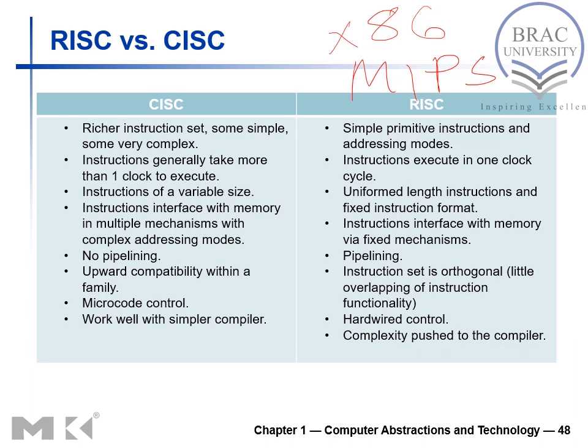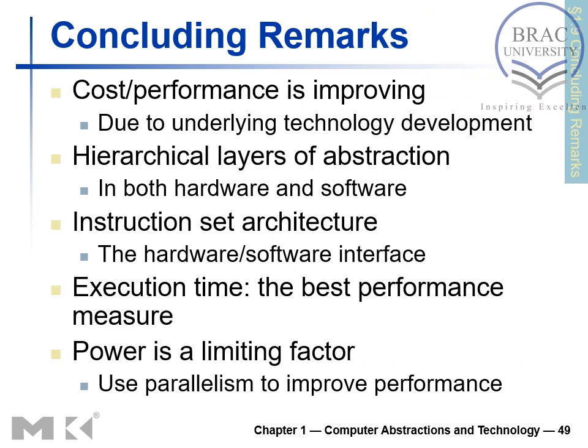RISC is mainly used in embedded systems for specific-purpose computer design, while CISC is used for more general-purpose computing. To conclude this lecture: cost and performance are improving due to underlying technology developments as hardware gets cheaper. We covered hierarchical layers of abstraction, instruction set architecture, execution time as a performance measure, and power as a limiting factor.